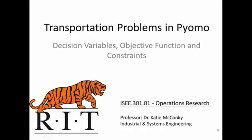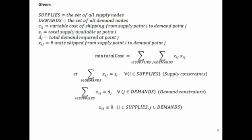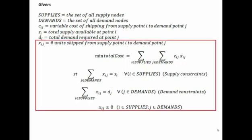Welcome back. In this video we're going to finish up the transportation problem. In particular we're going to be formulating the decision variables, objective function, and the constraints. Last video we looked at formulating the parameters, the sets, and the data file. And in this video we're going to do the rest of the model.